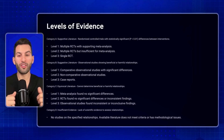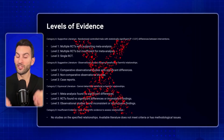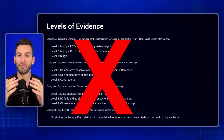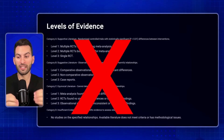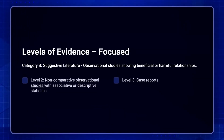Now let's go over the levels of evidence. My goal for this podcast is to be very high yield and clinically relevant. The only levels of evidence that truly apply here are category B levels 2 and 3, which basically tells us that most of the recommendations and evidence for TEE in the perioperative period come from observational studies and case reports, not large randomized control trials.